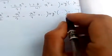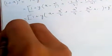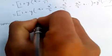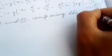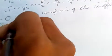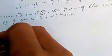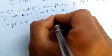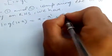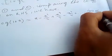Let's name this Equation 2. Now from Equation 1 and Equation 2, comparing the coefficients of y on the right-hand side, we get: log of (1 + x) equals x minus x squared by 2 plus x cubed by 3 minus x to the 4th by 4, plus and so on to infinity. This completes the proof.